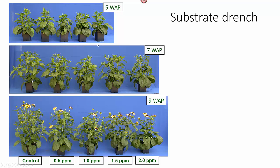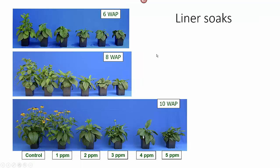Let's compare that to the substrate drench. The rates we were using were pretty low — 0.5 up to 2 parts per million at two fluid ounces per pot. You can see we did not have very much growth control, particularly early on, but as we get into flowering we have a little more growth control in the end stage. Obviously this would be a starting rate for these applications; we would probably see better control if we went a little higher. But on the other hand, that's a pretty nice looking plant.